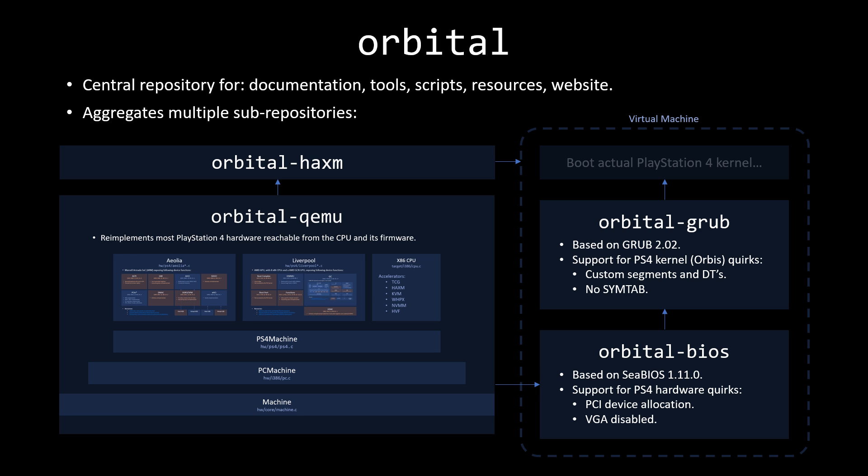QEMU typically uses SeaBIOS, but because the PS4 consoles have several quirks it doesn't work as-is, so we forked SeaBIOS 1.11 and added support for certain quirks, especially around PCI device allocation. We also disabled VGA for several reasons. Those quirks are all taken care of by Orbital BIOS, which chain-loads into Orbital Grub — the bootloader — and in the actual PS4 there is a component responsible for loading the PS4 kernel, called Orbis. That PS4 kernel is based on FreeBSD.